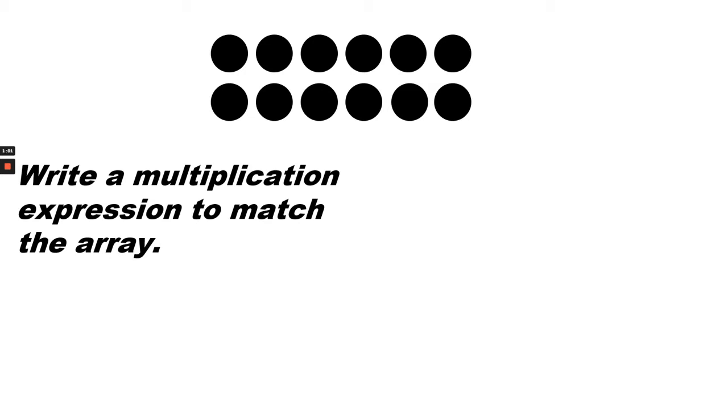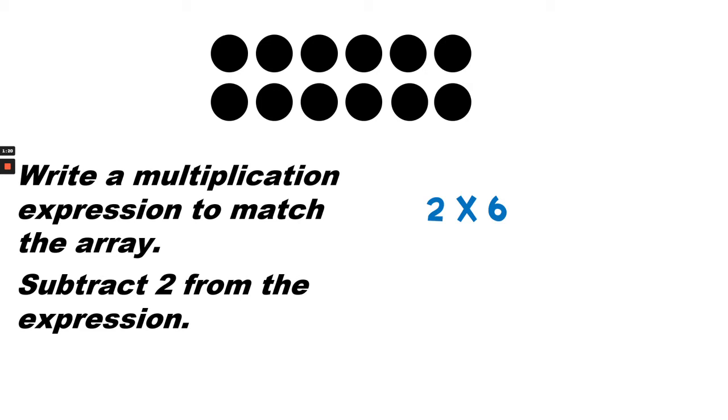Let's look at this array. Write a multiplication expression to match the array. The expression would be 2 times 6 because there are 2 rows with 6 in each row. Now subtract 2 from the expression.